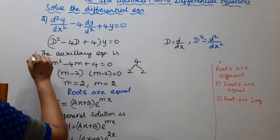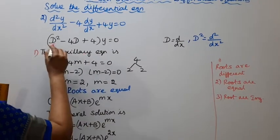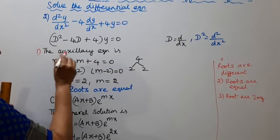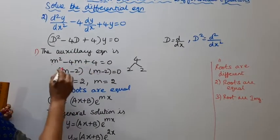First we need to find the auxiliary equation. The auxiliary equation in terms of m is m² - 4m + 4 = 0. Let's factorize this.